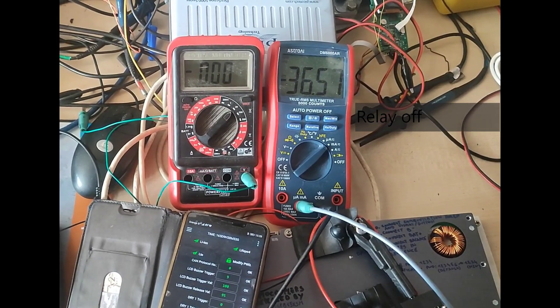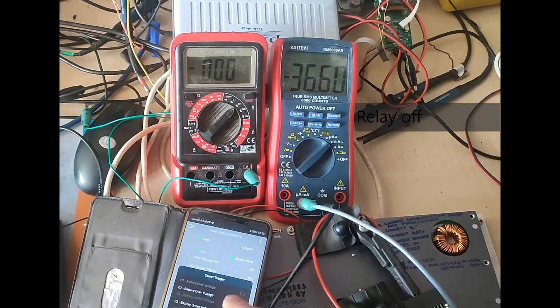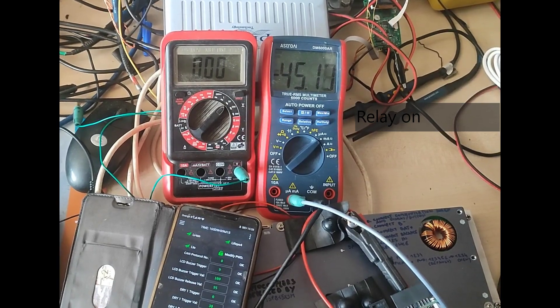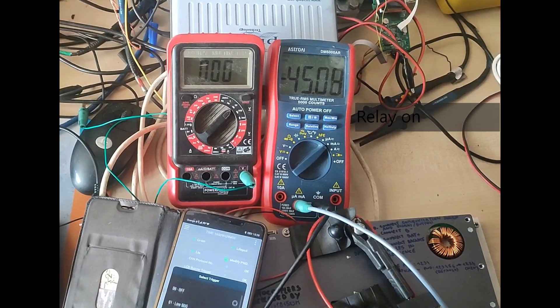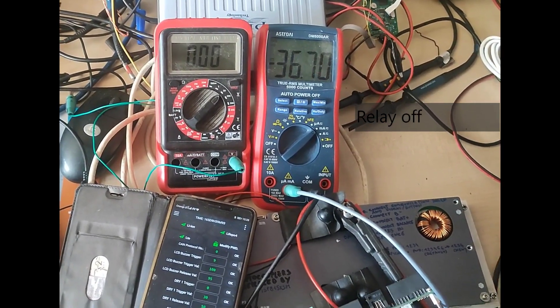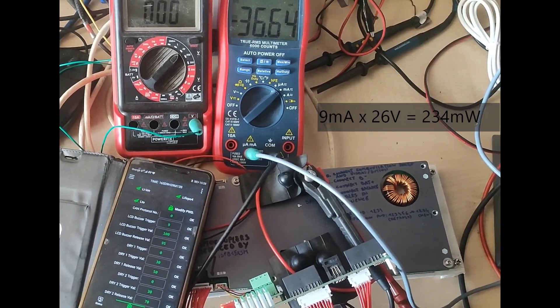I was also interested to measure the extra consumption of the BMS when the relay is activated. As I am simulating my system which uses 8 batteries in series, my power supply is set to 26 volts. The right meter now measures the total current consumption of the BMS. It goes from 36 mA to 45 mA when activating a single relay. So that's a bit less than 250 mW per active relay.